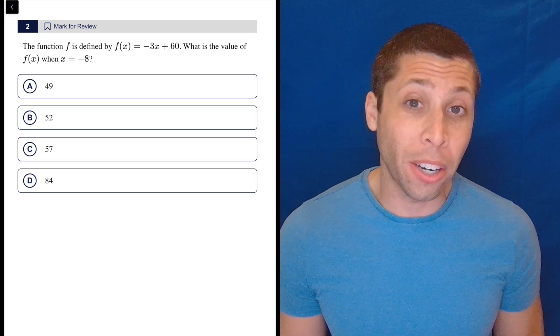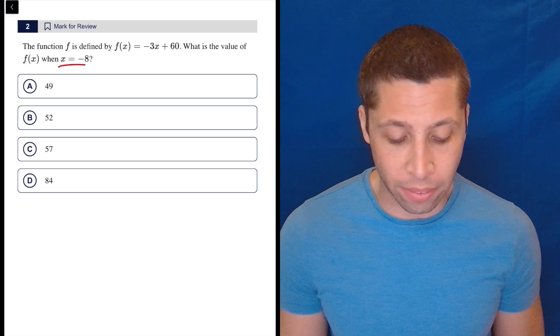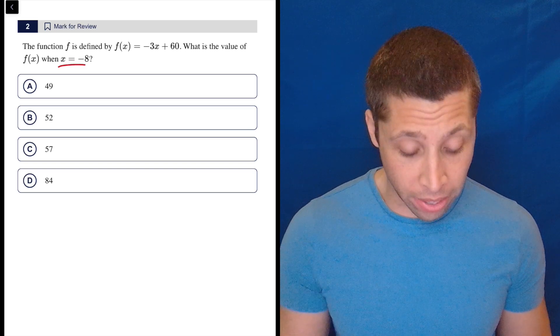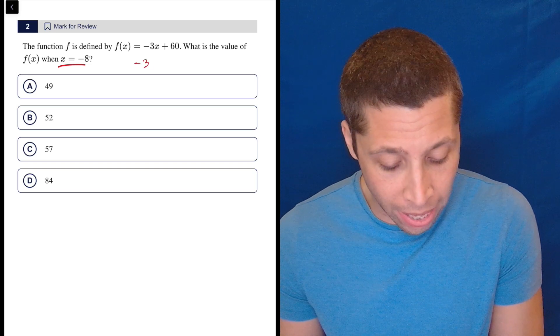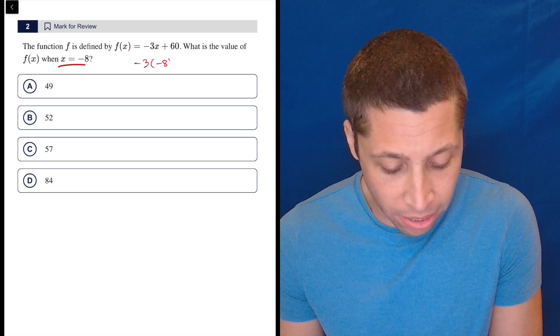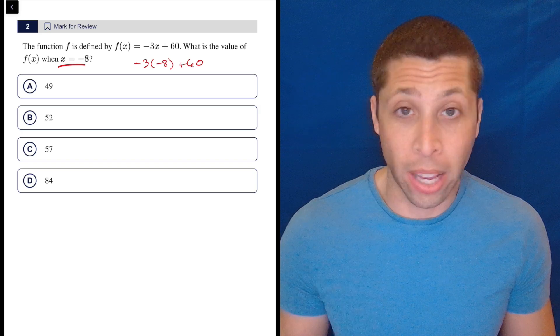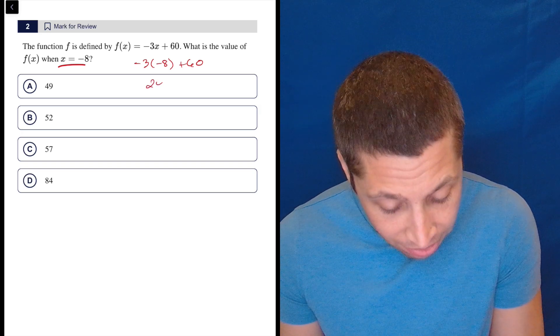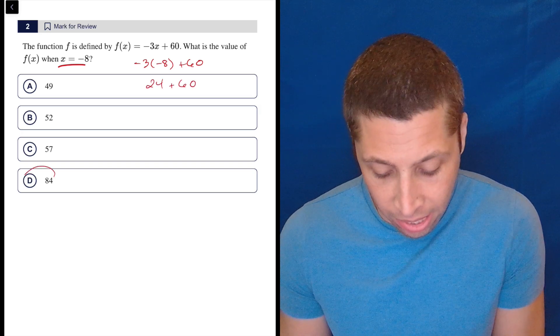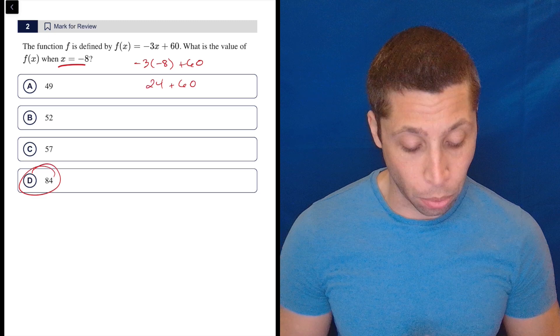Here they're being more generous than usual—they're telling us that x is equal to negative 8, so we just put negative 8 in for x. I would do this in my head, but negative 3 times negative 8 plus 60 is really what we're doing here. So negative 3 times negative 8 is positive 24, plus 60 is 84. That's the whole thing.